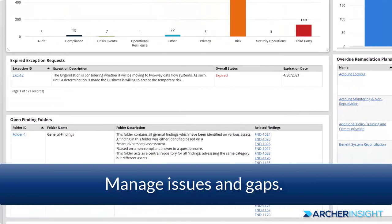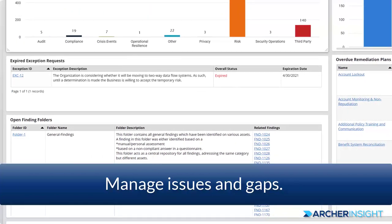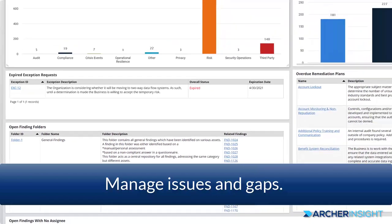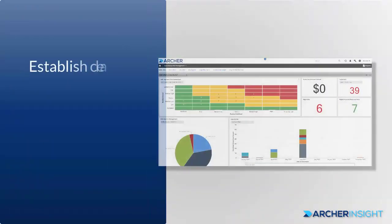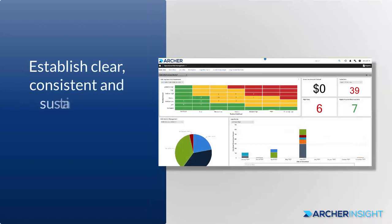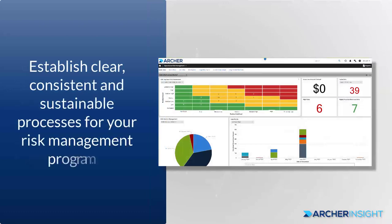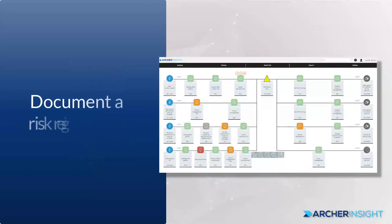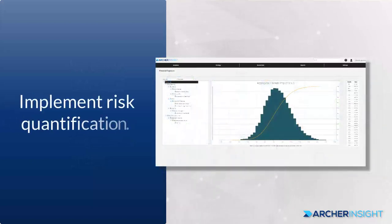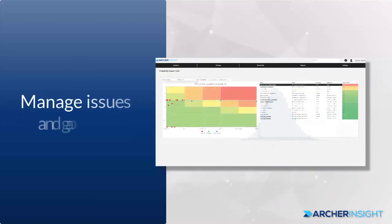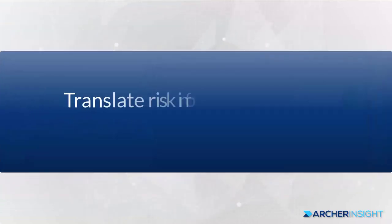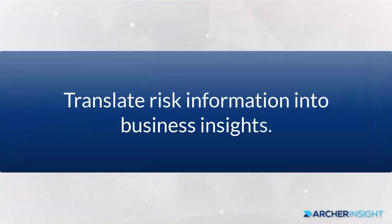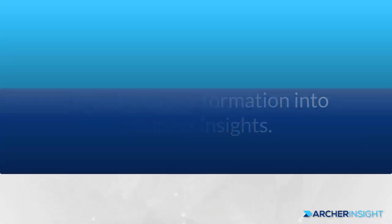These issues can be documented, reviewed, and routed for remediation by the appropriate stakeholders. Archer enables you to establish clear, consistent, and sustainable processes for your risk management program — from documenting a risk register, to implementing risk quantification, to managing issues and gaps. Archer provides the tools necessary to translate risk information to business insight.